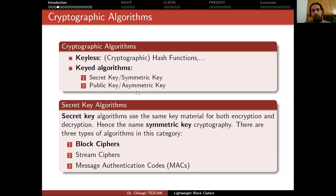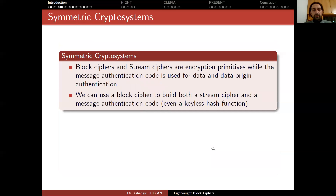In this lecture we won't talk much about asymmetric key cryptography because those algorithms require a lot of computational power. For this course we will be talking about devices which have very limited memory and very limited computational power, which are not suitable for most algorithms in public key cryptography. So we will be focusing mostly on the symmetric key part. Block ciphers and stream ciphers are encryption primitives, while the message authentication code is used for data and data origin authentication — so there is no encryption there, it only provides authentication.